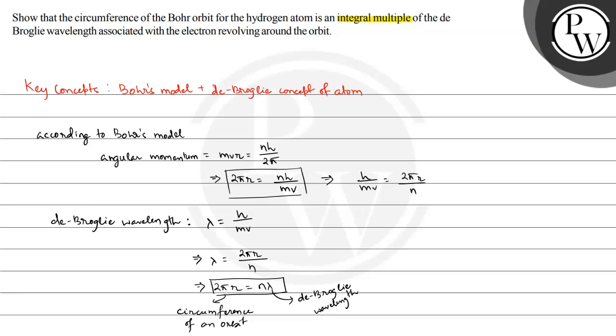Alright, so the circumference of an orbit is integral multiple of the de Broglie wavelength. This is the required answer. I hope you understood the concept well. Best of luck.